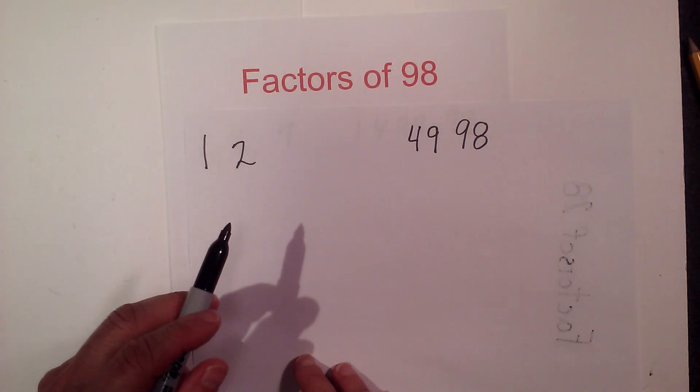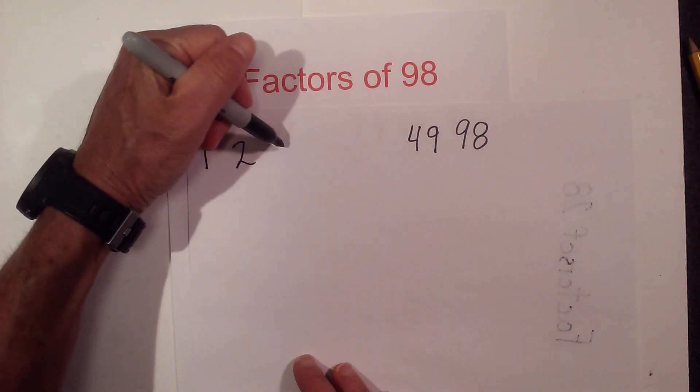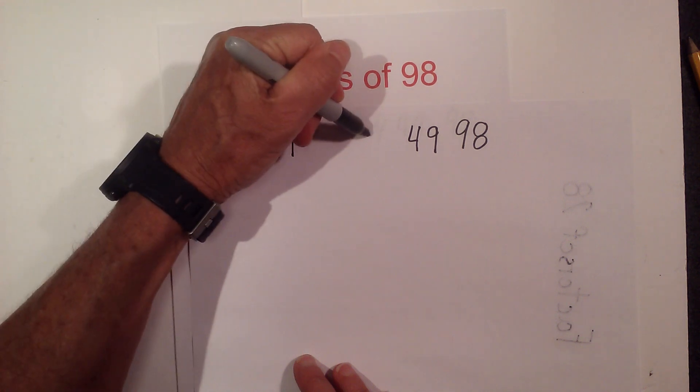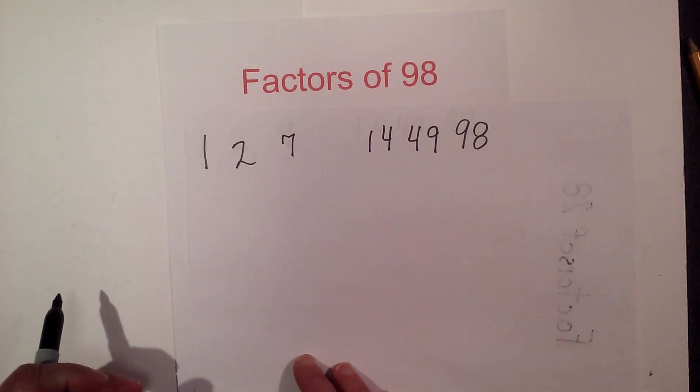So next we have 2 times 49 equals 98. 3 will not go into 98 nor will 4, 5, or 6.